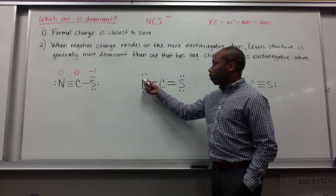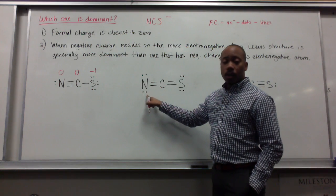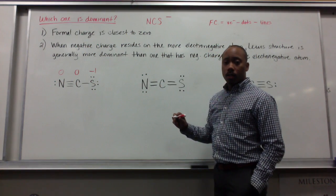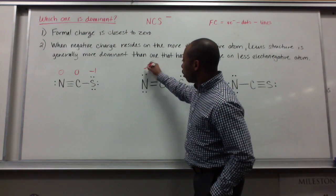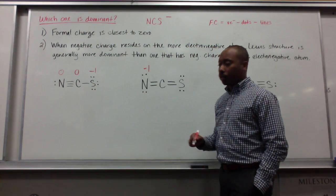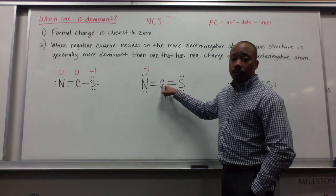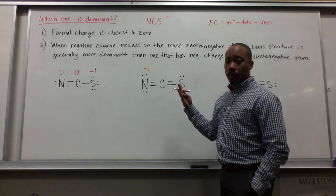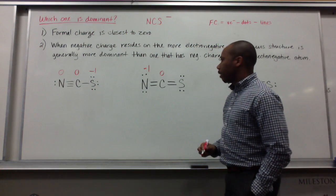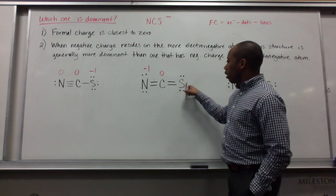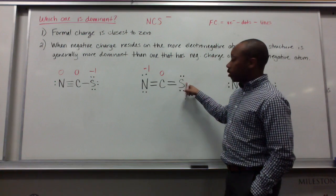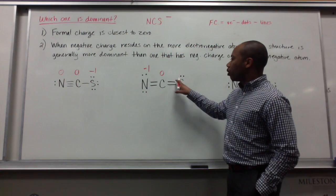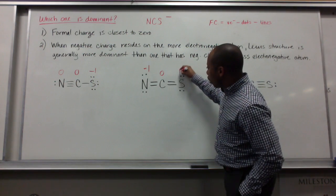For the second structure, nitrogen has five valence electrons, minus four dots — five minus four is one — minus two lines, giving a formal charge of negative one. Carbon has four valence electrons minus zero dots, which is four, minus four bonds — wait, zero lines — giving zero. Sulfur has six valence electrons, minus four dots — six minus four is two — minus two lines, giving a formal charge of zero.